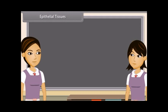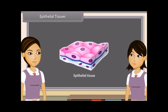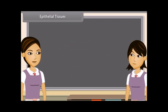Tissues which cover all the organs of body externally and also line hollow organs internally are known as epithelial tissue. The cells of epithelial tissue are tightly packed and form a continuous sheet. There is no intercellular space and matrix between these cells.